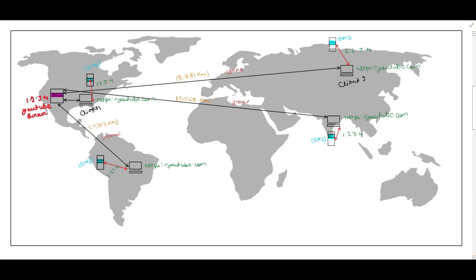This is client two from Russia. The distance is too far — approximately 8,881 km. When client two from Russia queries the DNS server to get youtube.com, it returns the same IP 1.2.3.4, so client two connects to the same YouTube server and gets the video. But there is a catch — it takes 190 milliseconds. For the US client it was taking only 1 millisecond. The user experience is much better for United States clients.